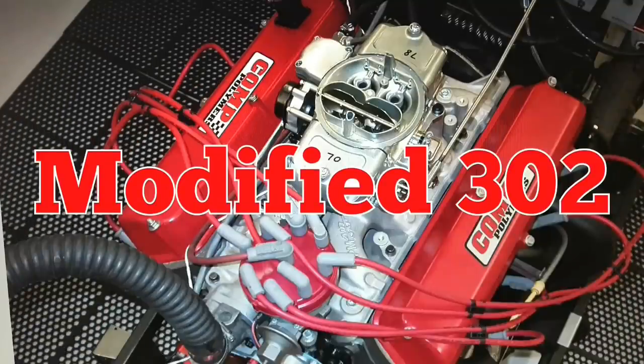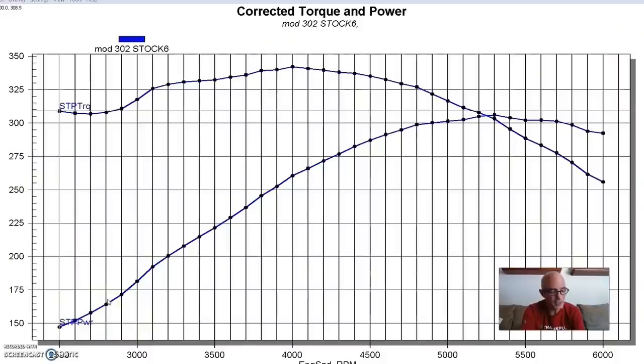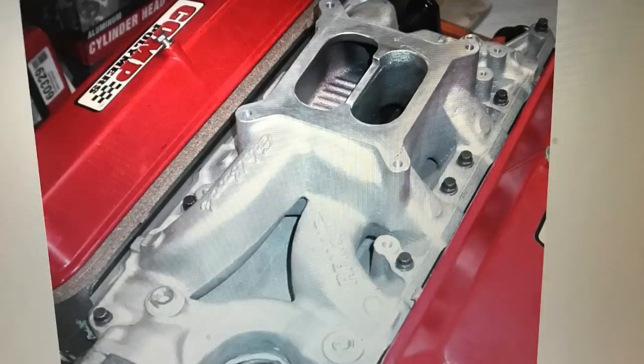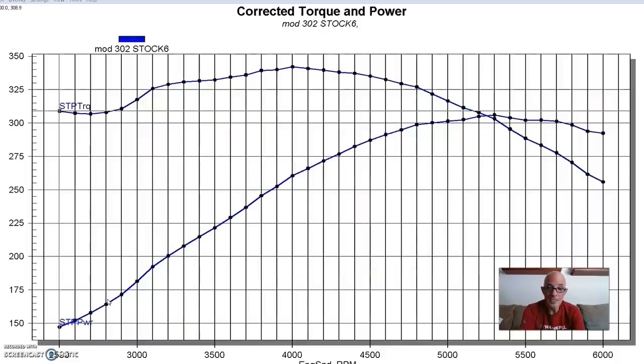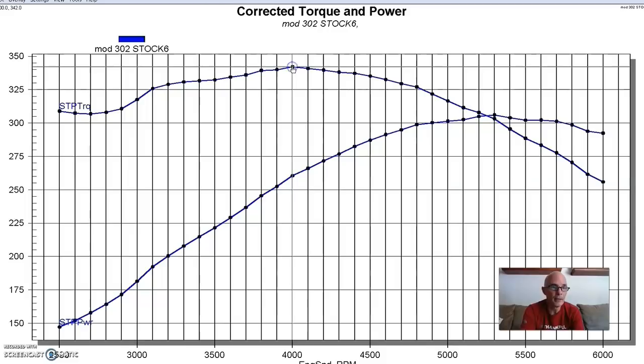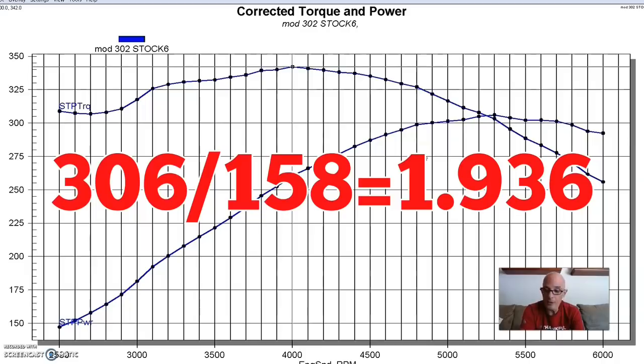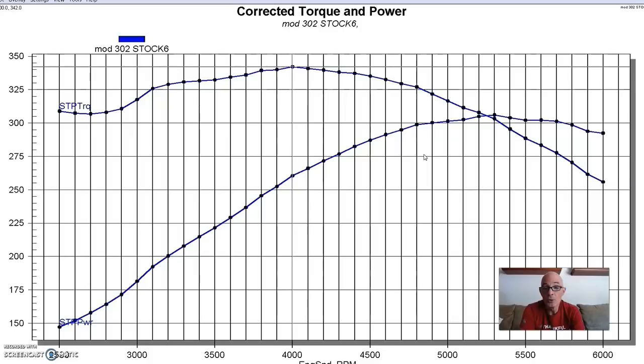Test motor number two was a modified 302, actually a 306 inch motor. It had a mild comp cam in it, and it was also carbureted with a dual-plane intake and a 650 Holley. It was a modified version, still the same head—exactly the same head as we ran on that stock version. Equipped with the cam and intake manifold and long tube headers, this combination made 306 horsepower and 342 foot-pounds of torque. If we use the calculation, 306 horsepower divided by 158 CFM, we get 1.936 horsepower per CFM. We're starting to use the cylinder head more, and we're starting to get a little bit more restrictive.